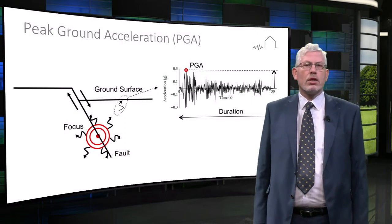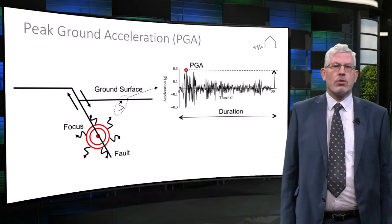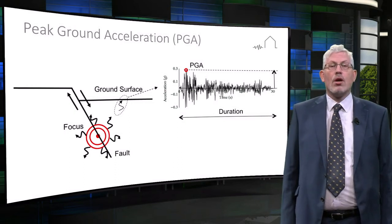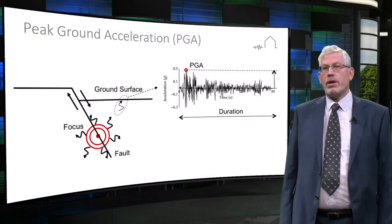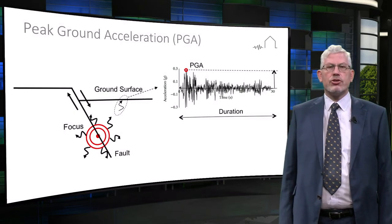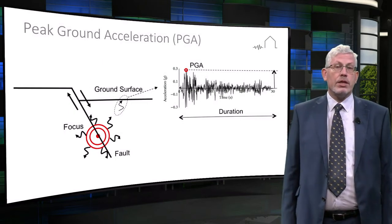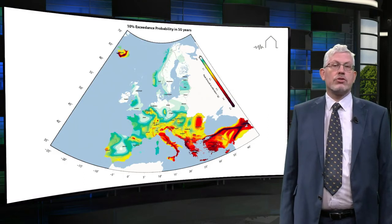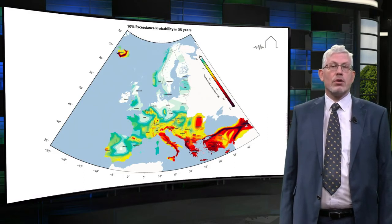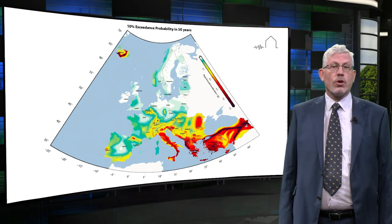Unlike the Richter and moment magnitude scales, PGA is not a measure of the total energy, magnitude or size of an earthquake, but rather a measure of how violently the Earth shakes at a given geographic point. PGA is most commonly used in seismic building codes such as Eurocode 8 and is often plotted on seismic hazard maps.